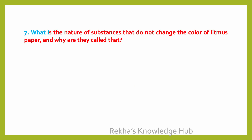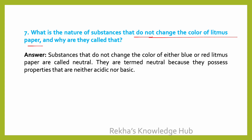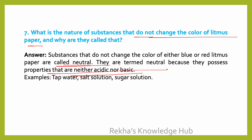What is the nature of substances that do not change the color of litmus paper, and why are they called that? Substances that do not change the color of either blue or red litmus paper are called neutral substances. They are termed neutral because they possess properties that are neither acidic nor basic. Examples include tap water, sugar solution, and salt solution.